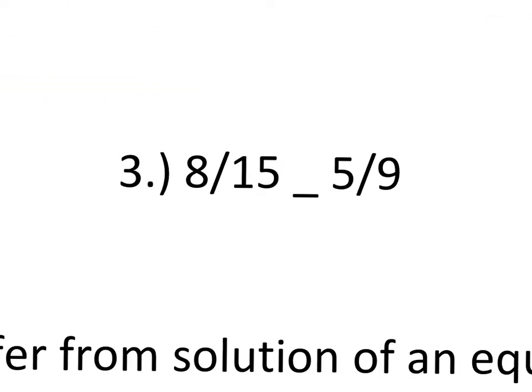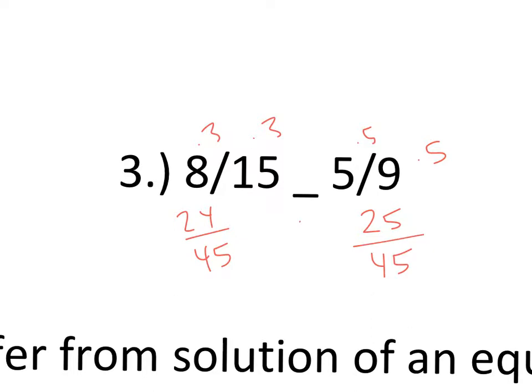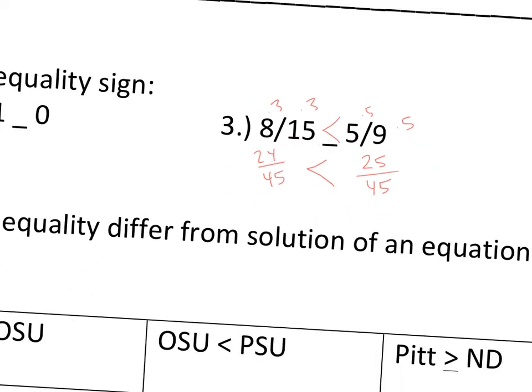For eight fifteenths and five ninths, you need common denominators to compare fractions. Using 45 as the common denominator: eight fifteenths becomes 24/45, and five ninths becomes 25/45. Since 24/45 is less than 25/45, eight fifteenths is less than five ninths. That's just the basics for inequalities.